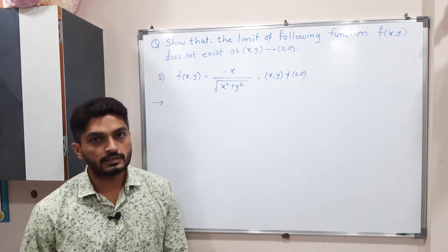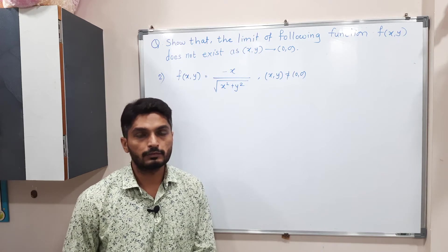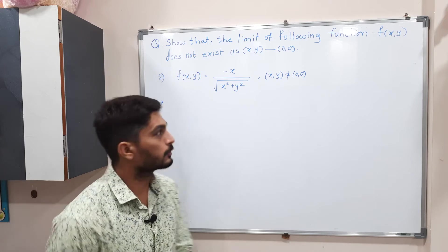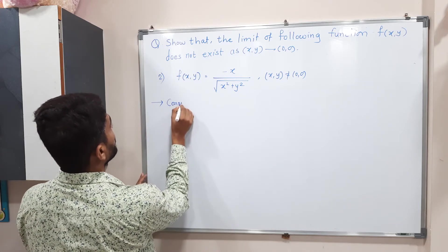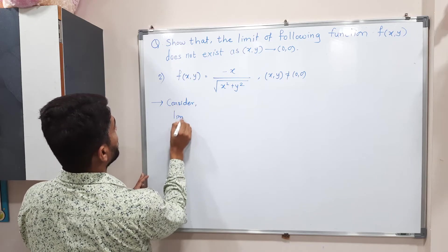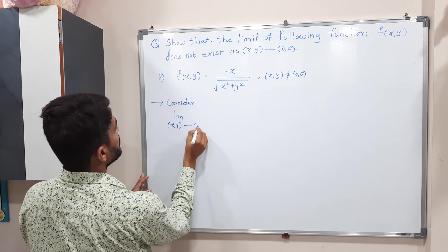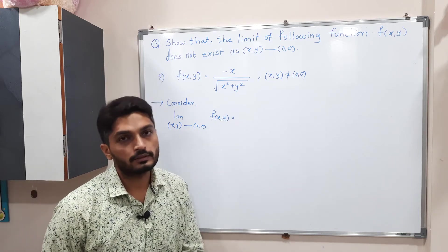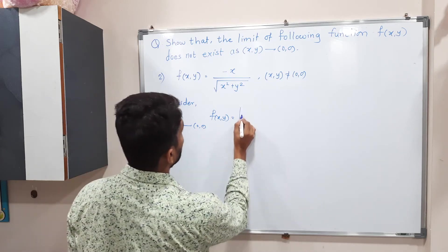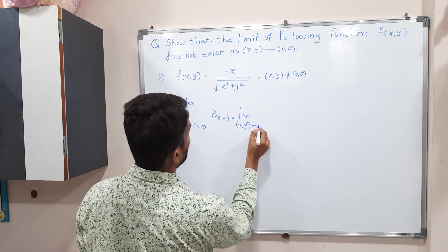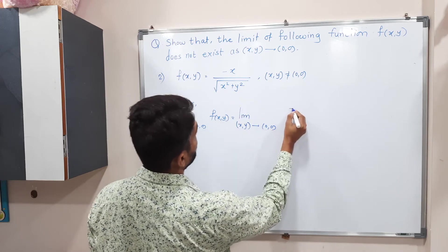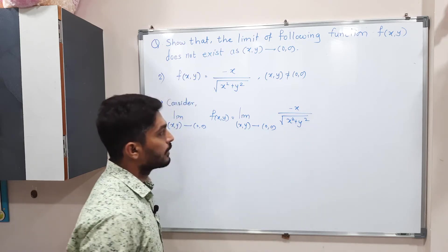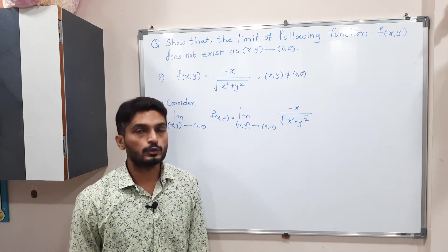Let us try the next example. Again we have a function f(x,y) and we have to prove that the limit does not exist here as well. So we start by writing: limit as (x,y) tends to (0,0) of f(x,y), and putting in the definition, f(x,y) = -xy / √(x² + y²).